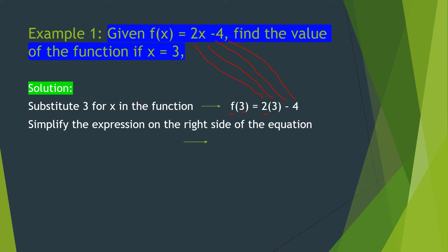Next, we simplify the expression on the right side of the equation. We will have f at 3 is equal to 2 times 3, which is 6, minus 4.